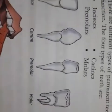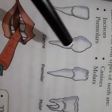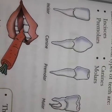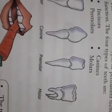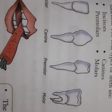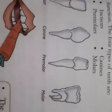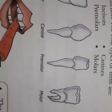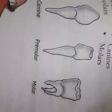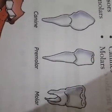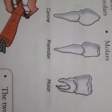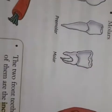The canines are the pointed and sharp teeth on either side of the incisors. There are four of them — two on the top and two on the bottom. They help tear food, hence they are also called tearing teeth.